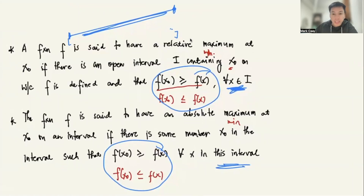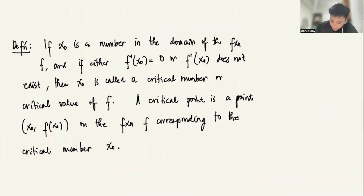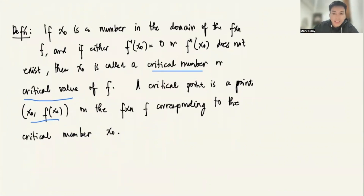Because of that, we introduce the notion of critical points, which will tell us about the existence of relative or absolute extrema. A number x₀ in the domain of f is called a critical number or critical value of f if either f′(x₀) = 0 or f′(x₀) does not exist. The corresponding ordered pair (x₀, f(x₀)) is the critical point.